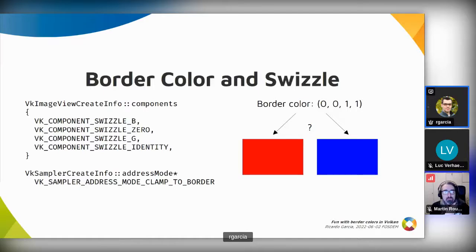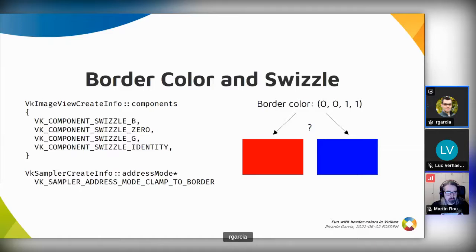Both options are more or less reasonable. If the border color is specified as part of the sampler, maybe you want to get that color back no matter which image view you use that sampler on — always expecting to get a blue border. But another valid interpretation is that the border color is supposed to act as if it came from the original image, and then it should be affected by the swizzle because the normal pixels from the image view are affected — giving you red.